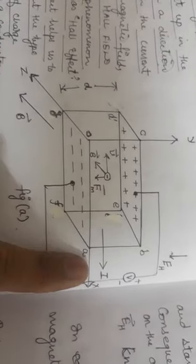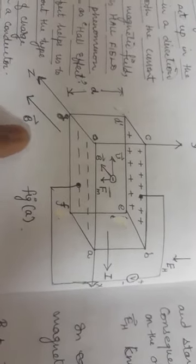Before deriving the expression, let me describe the diagram. I have taken a metallic rectangular strip whose bottom face is OAFG and the upper face is BCDE. D is the distance between the upper face and the lower face. A current I is flowing through this metallic strip along the positive X axis, and a magnetic field B is applied along the positive Z axis.